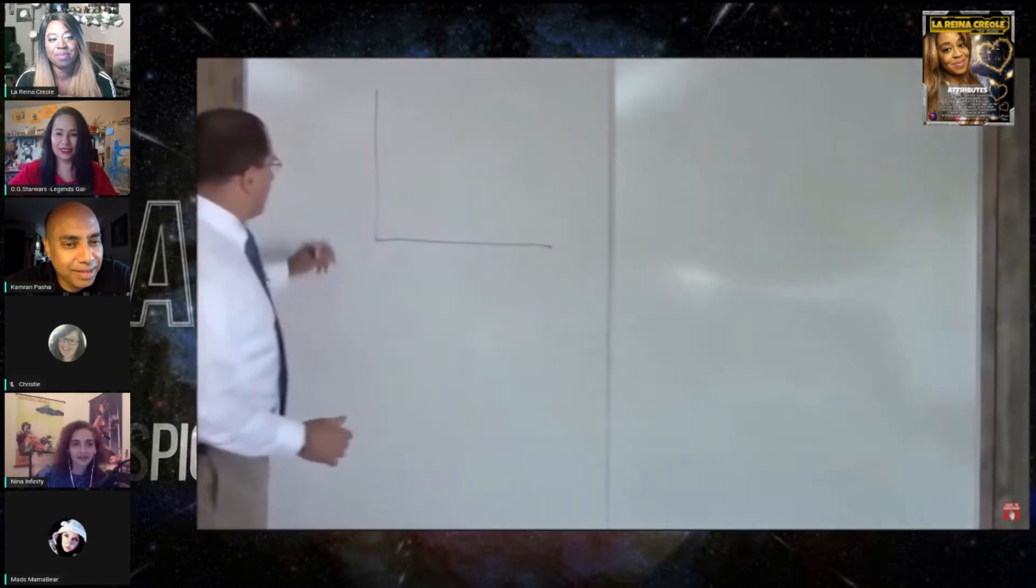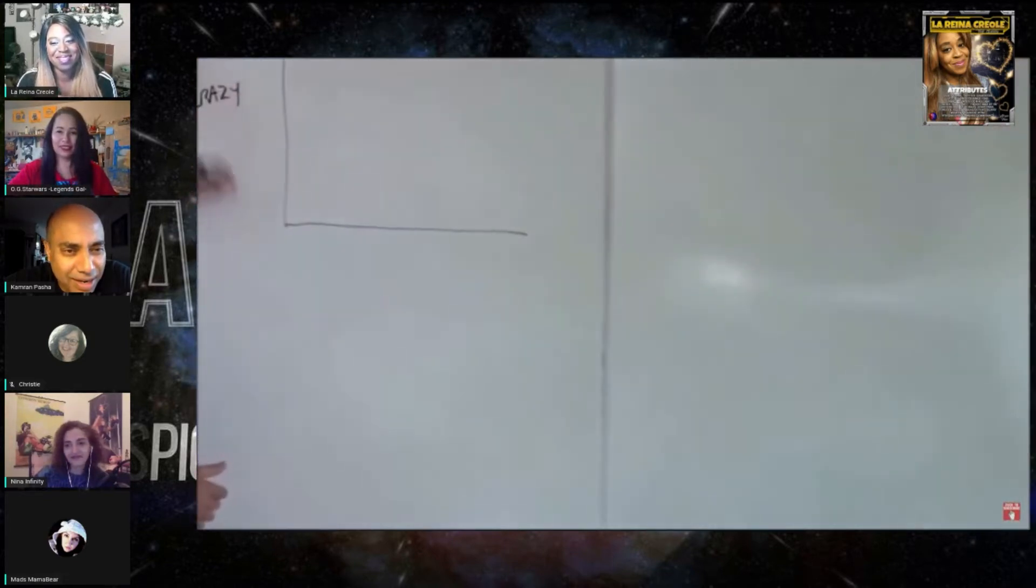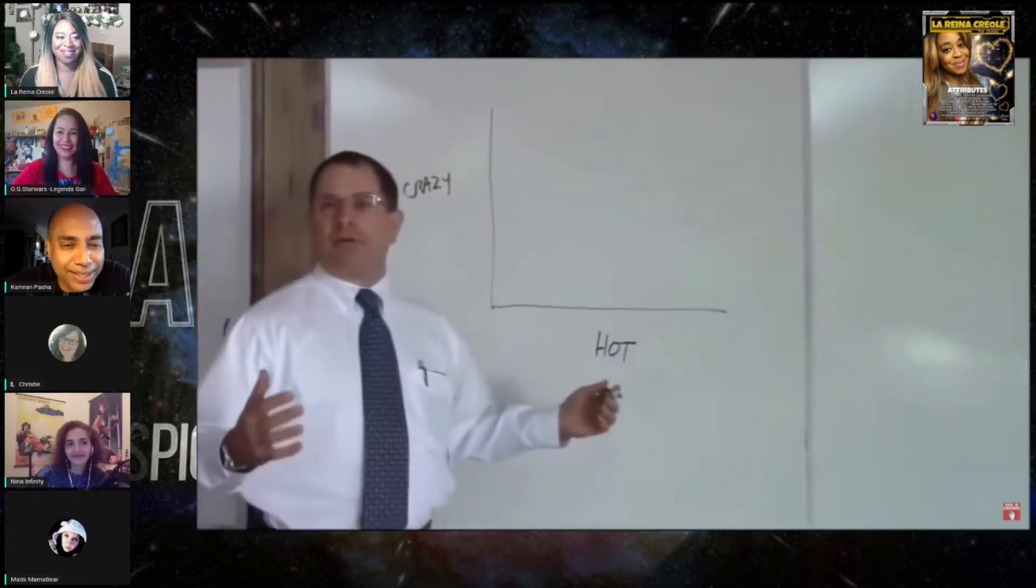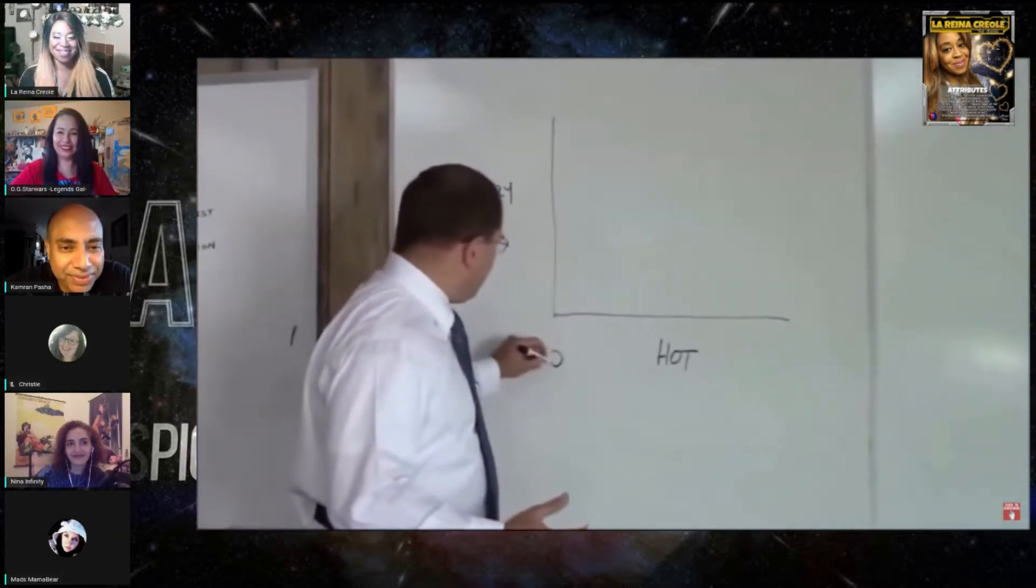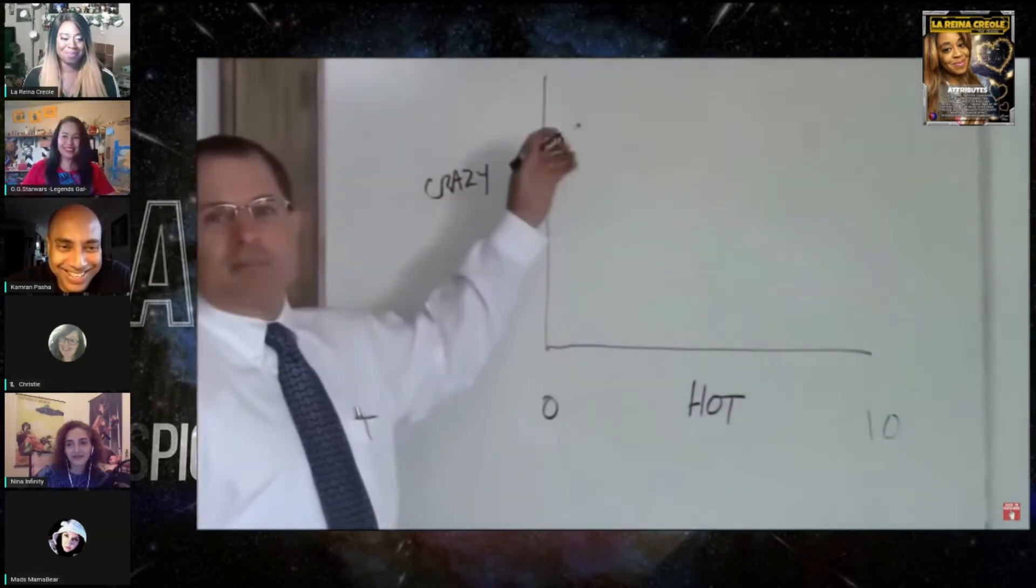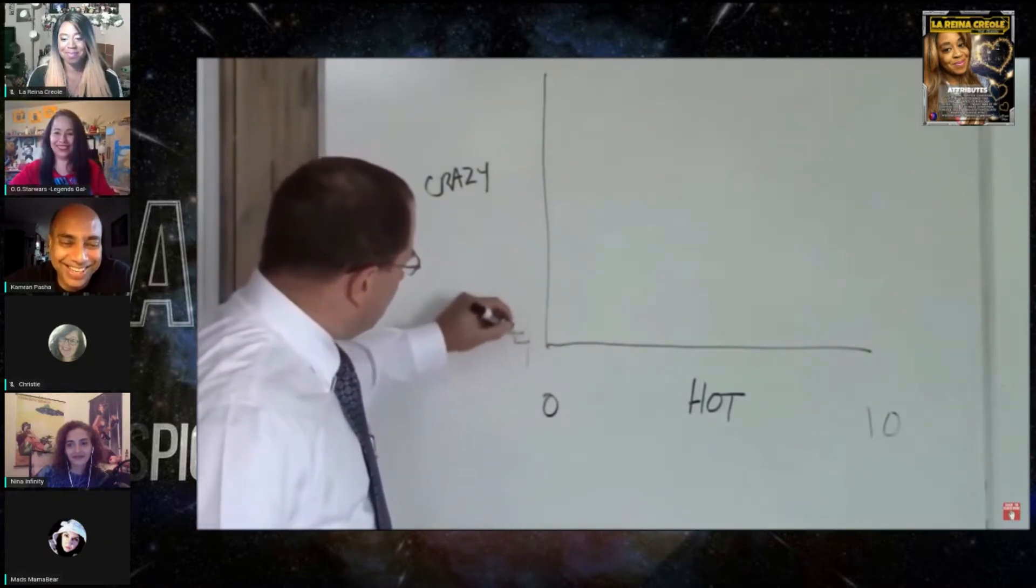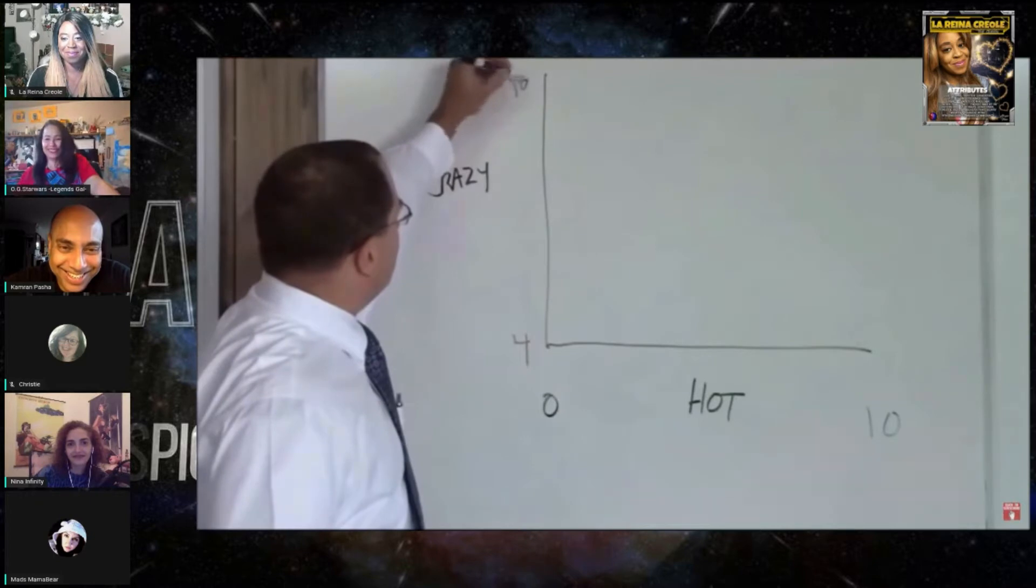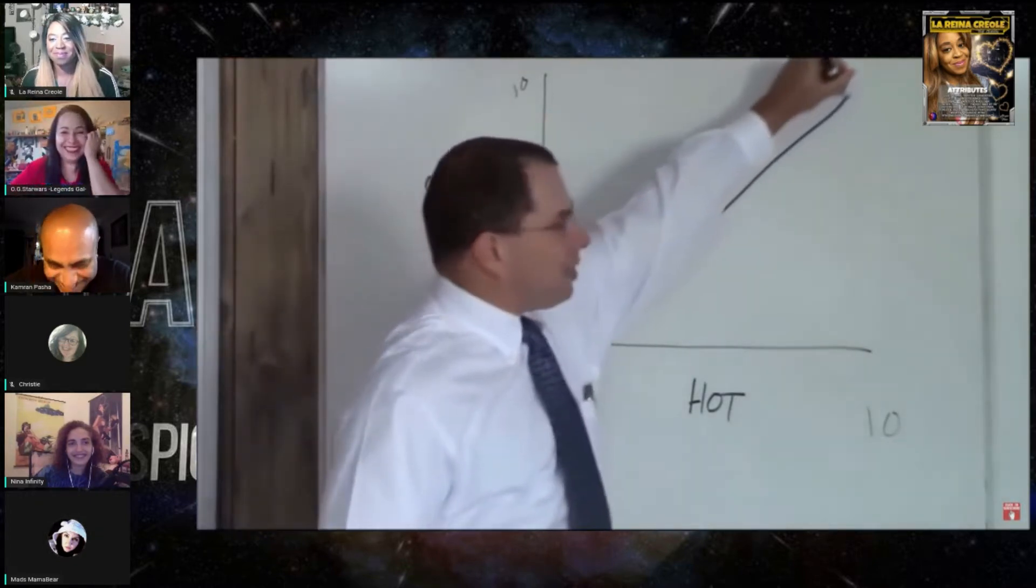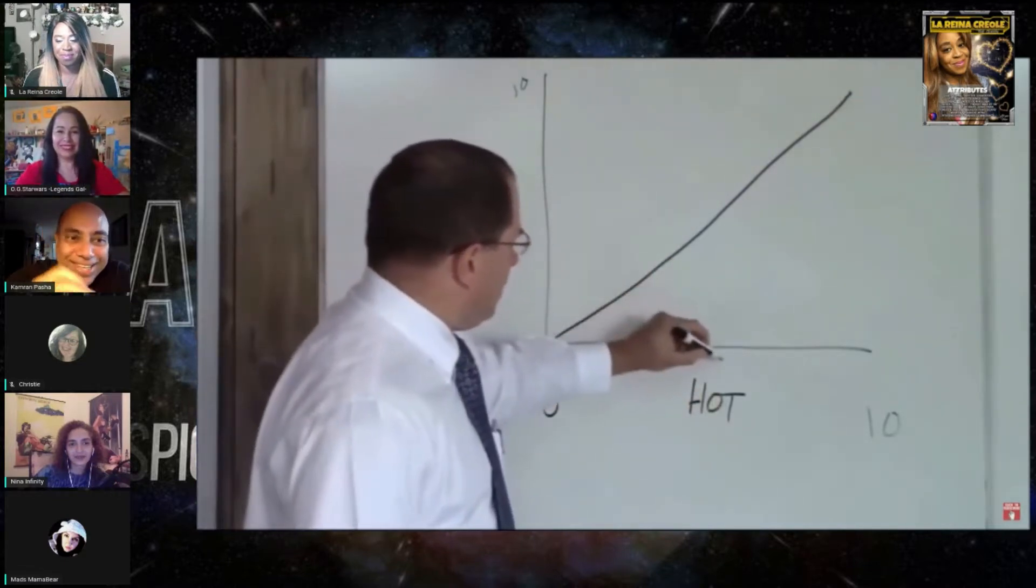I love this. You have your crazy axis and your hot axis. Zero to ten we're all familiar with that. Four to ten because of course there's no such thing as a woman who's not at least four crazy. There is a zero hot but there's nothing less than four on crazy.